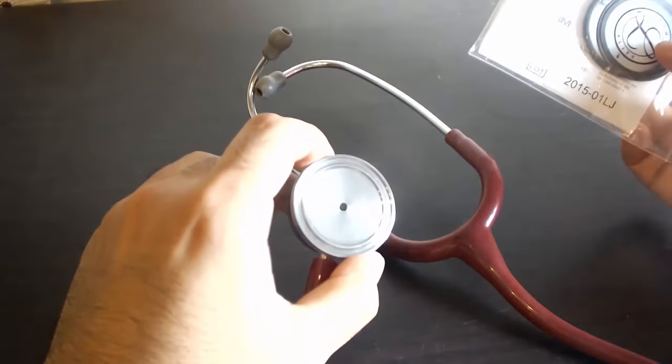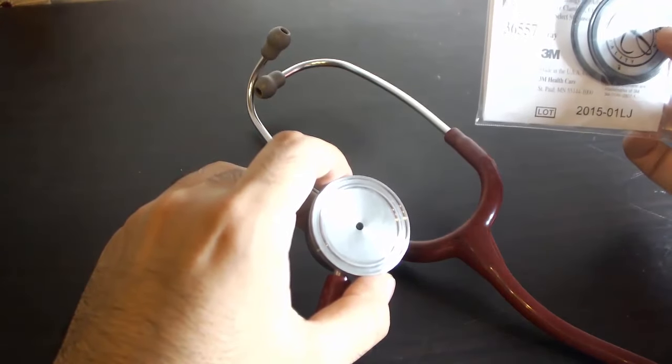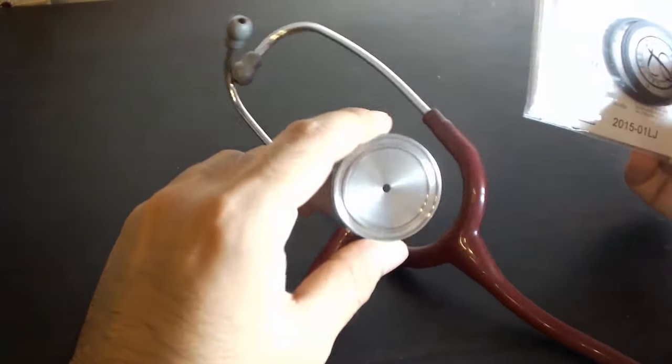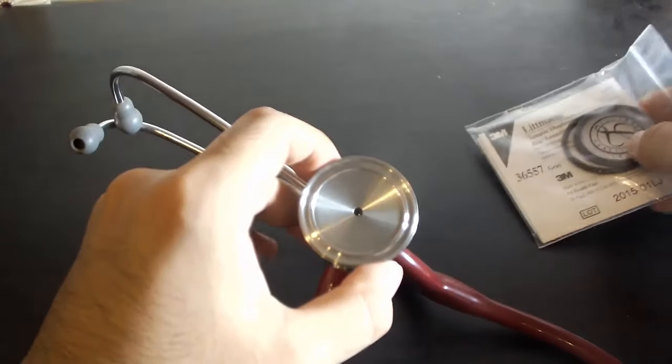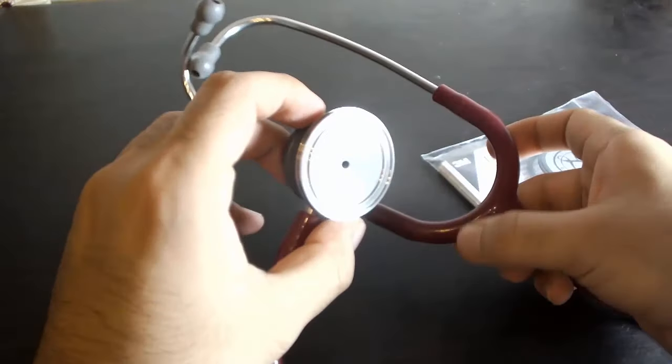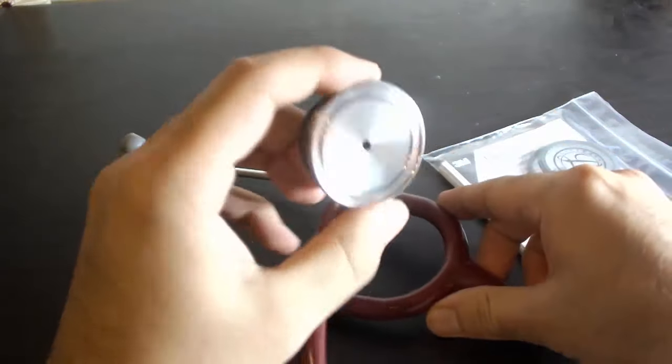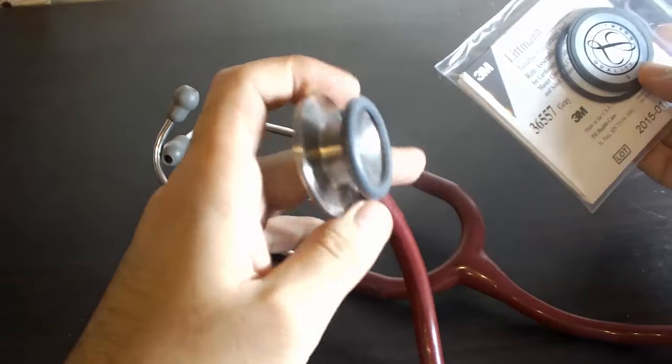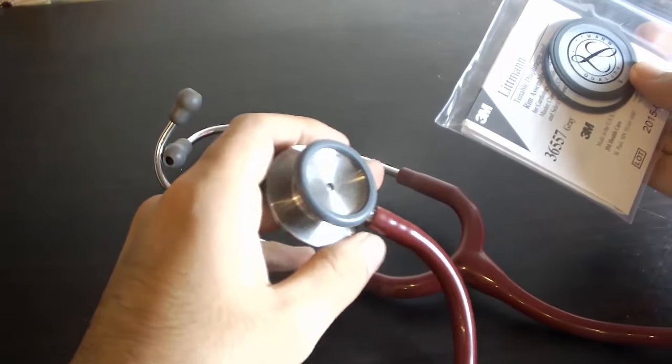I will show you how to assemble this tunable diaphragm assembly with rim on the Littmann Classic II model. This is not just a tutorial for this specific model—you can install the diaphragm and rim assembly on any model of the Littmann using this technique.